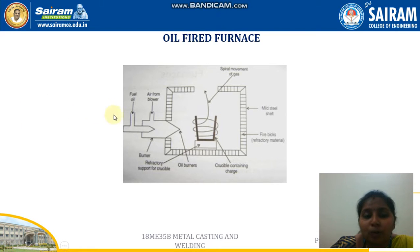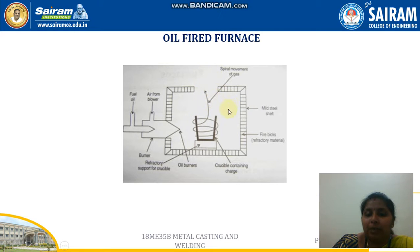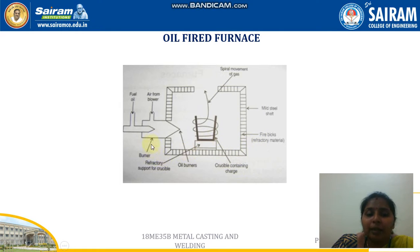There are two valves to control the fuel flow and also the air from the blower. The gases produced circulate around the crucible and escape through the outlet. The refractory is made up of fire bricks. This is the arrangement of an oil-fired furnace.